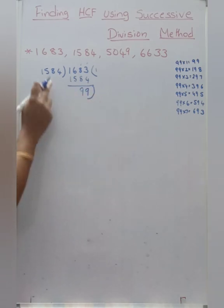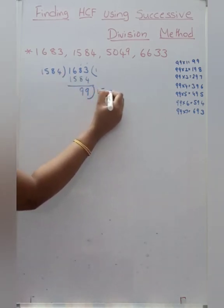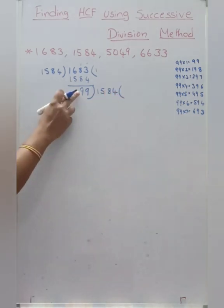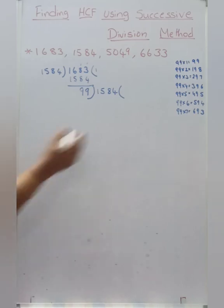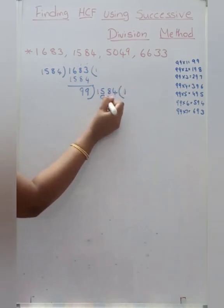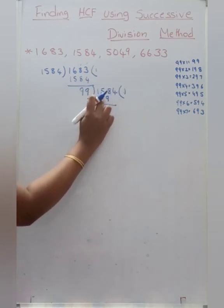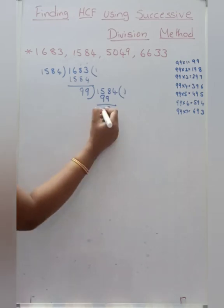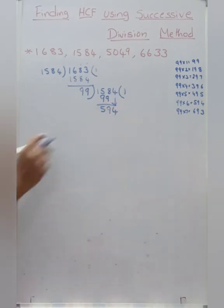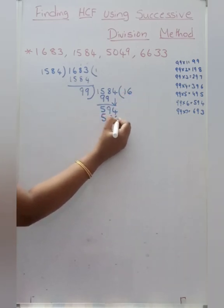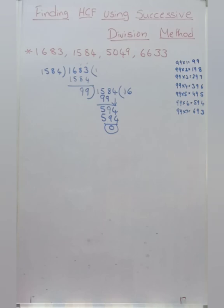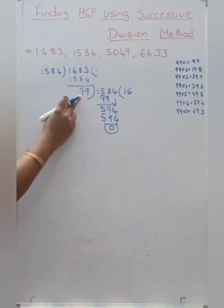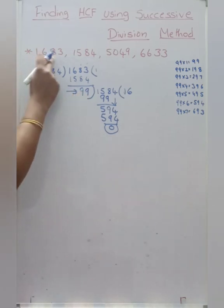Keep 99 like this — this is actually the remainder — and we have to take this divisor as the new dividend. Now dividing 1584 by 99: write 99 in the 1s and 10s place. 18 minus 9 is 9, 14 minus 9 is 5, write down 4. So we get 594. For 594, we read the 99 table — 6 times, that is 594. Remainder is 0.